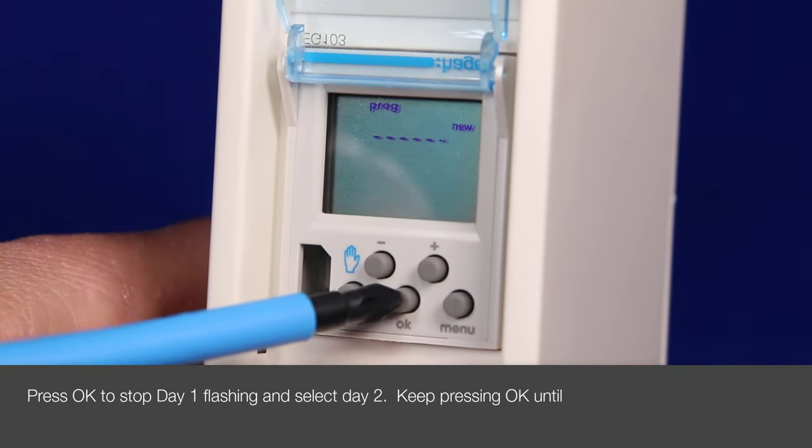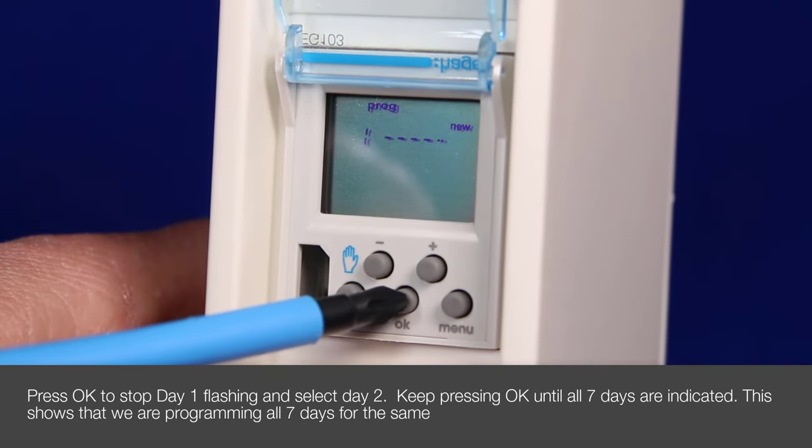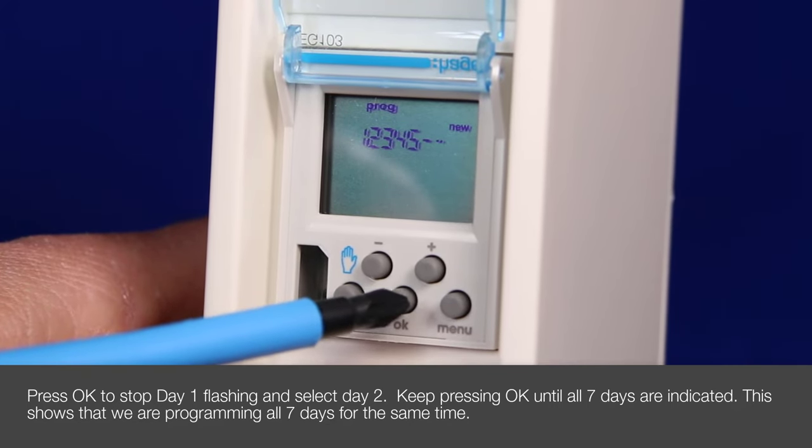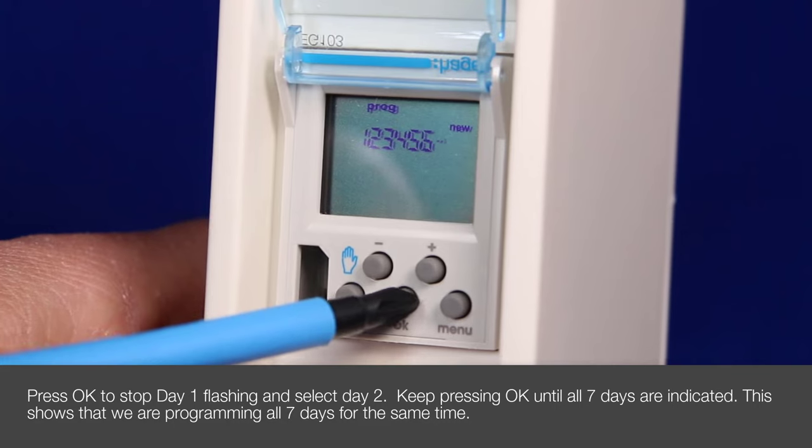Day 1 is flashing. If we press OK, day 1 stops flashing and day 2 starts flashing. And so on until all 7 days are not flashing indicating we are programming all 7 days.